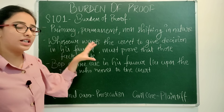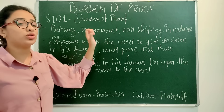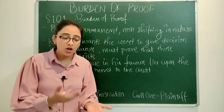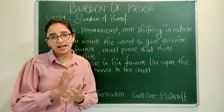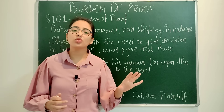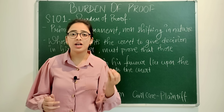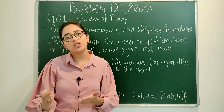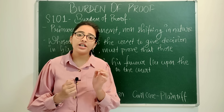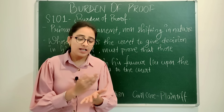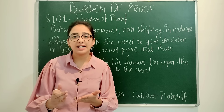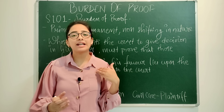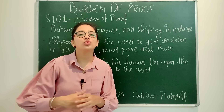Section 101 says that whoever wants the court to make a decision in their favor — whoever the person is who approaches the case — the initial burden of proof will be given to that person. Section 101 is the very basic and general rule of burden of proof. At the end of the trial, the person has to prove that the legal right was in their favor and the liability lies upon the other person.